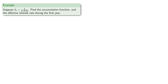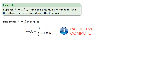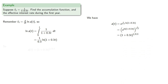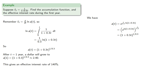Suppose we want our force of interest to have a given form. To find the accumulation function, the force of interest is the derivative of the log, so the log will be its integral. The accumulation function itself will be e raised to that power, which we can simplify. We know that after t equals 1 year, a dollar will grow to $2.40, giving an effective interest rate of 140%.